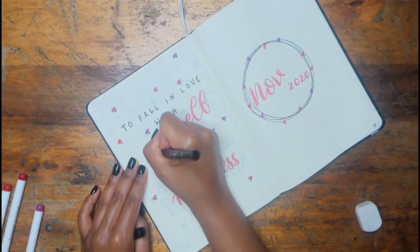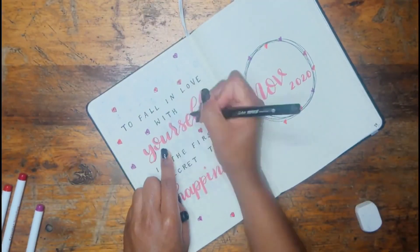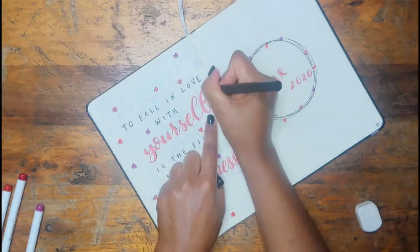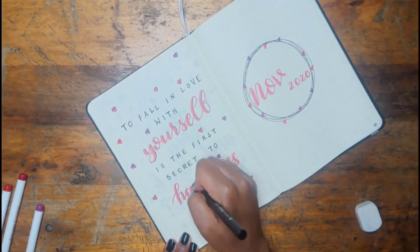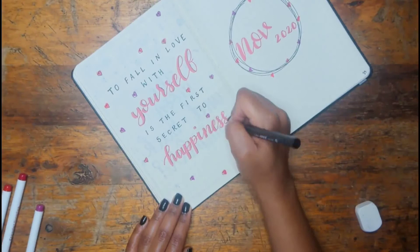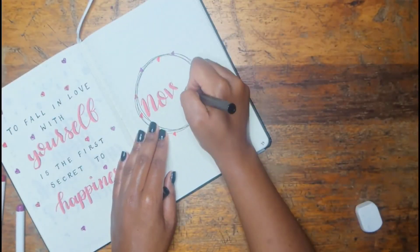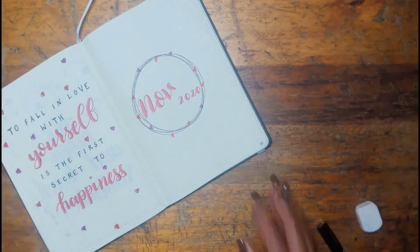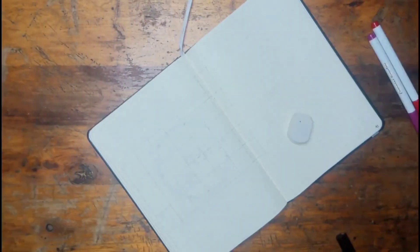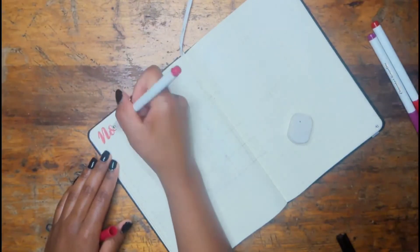Anyway, this is the cover page. I'm just adding some drop shadows on the down strokes of my lettering just to make it pop a little bit because it looked a little bit too plain and I didn't like how it looked, so I added some drop shadows with the fineliner.